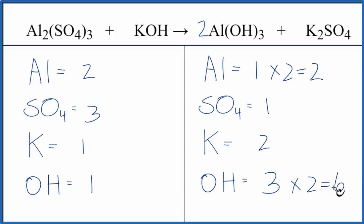Why don't we fix the hydroxide? Since we have six here and one here, that's going to change the K as well. So we have one hydroxide times six, that gives us six of those. They're balanced. And then we have one times six for the potassium, we have six potassiums.